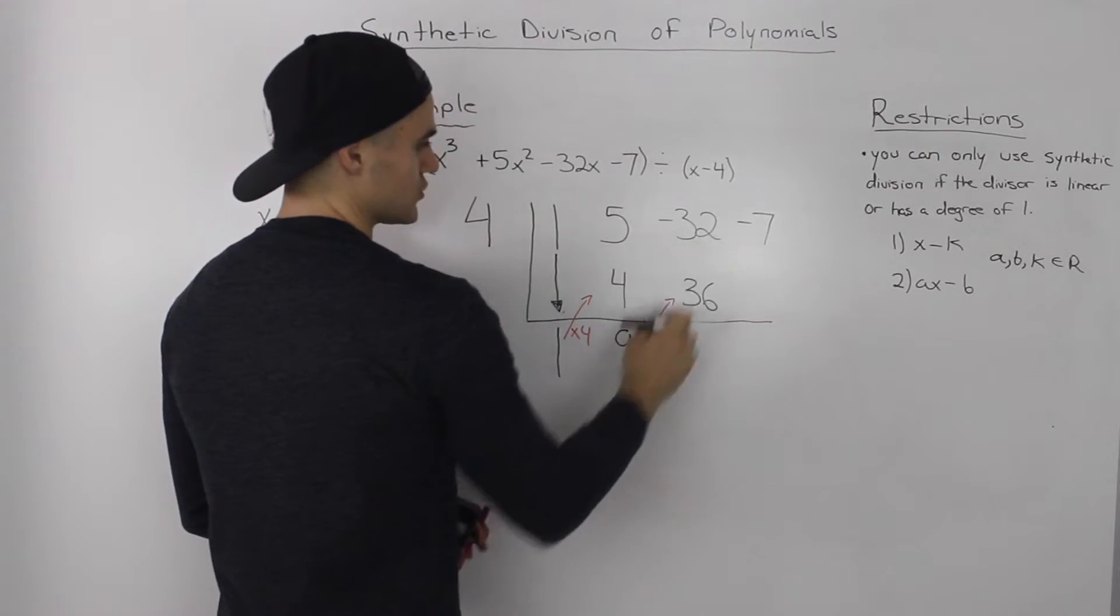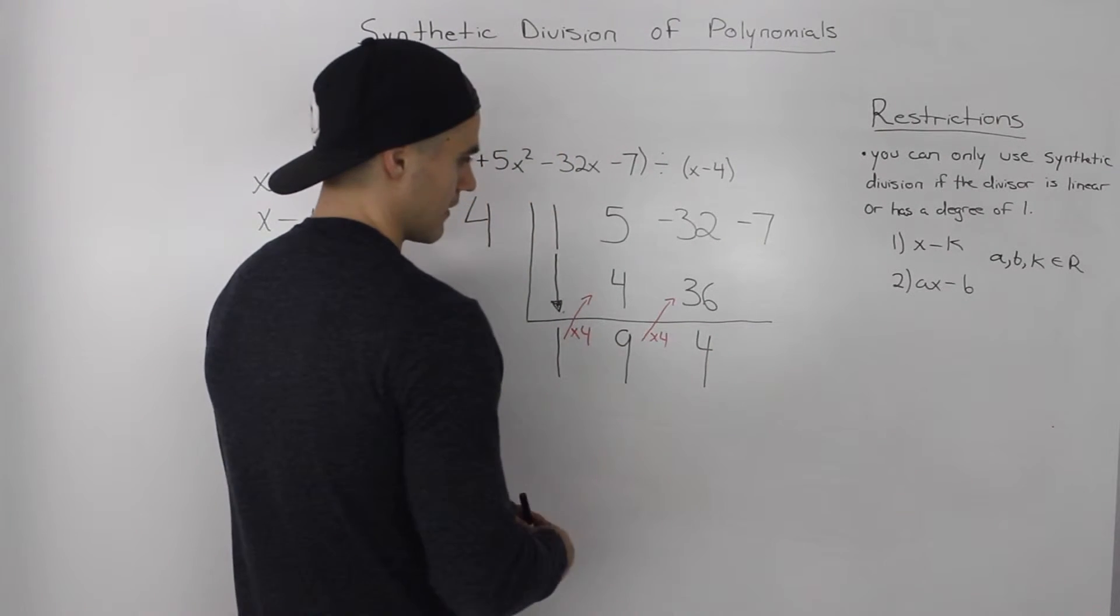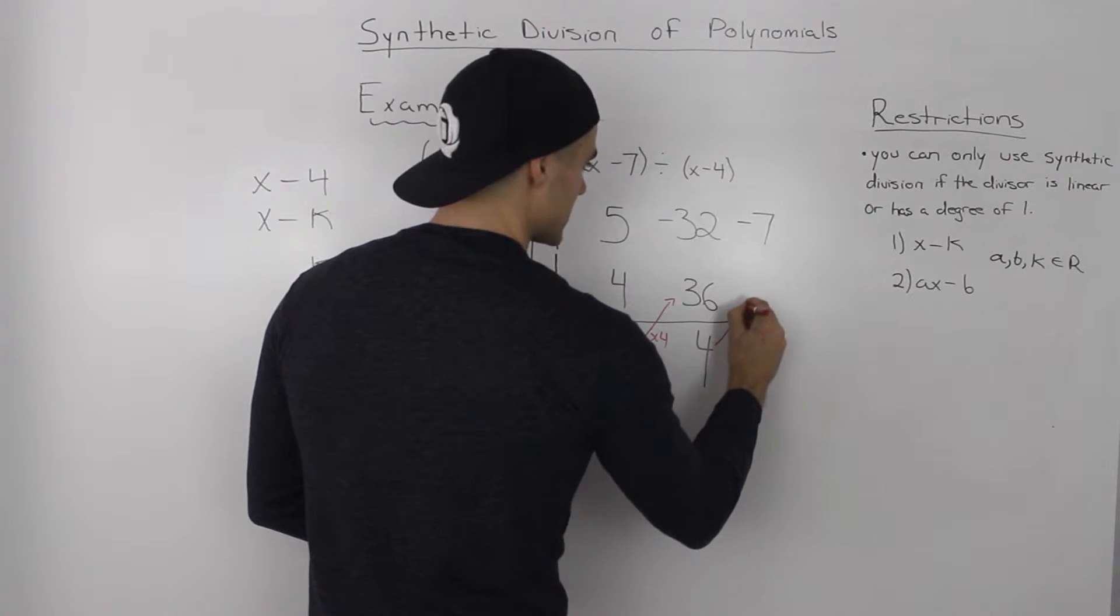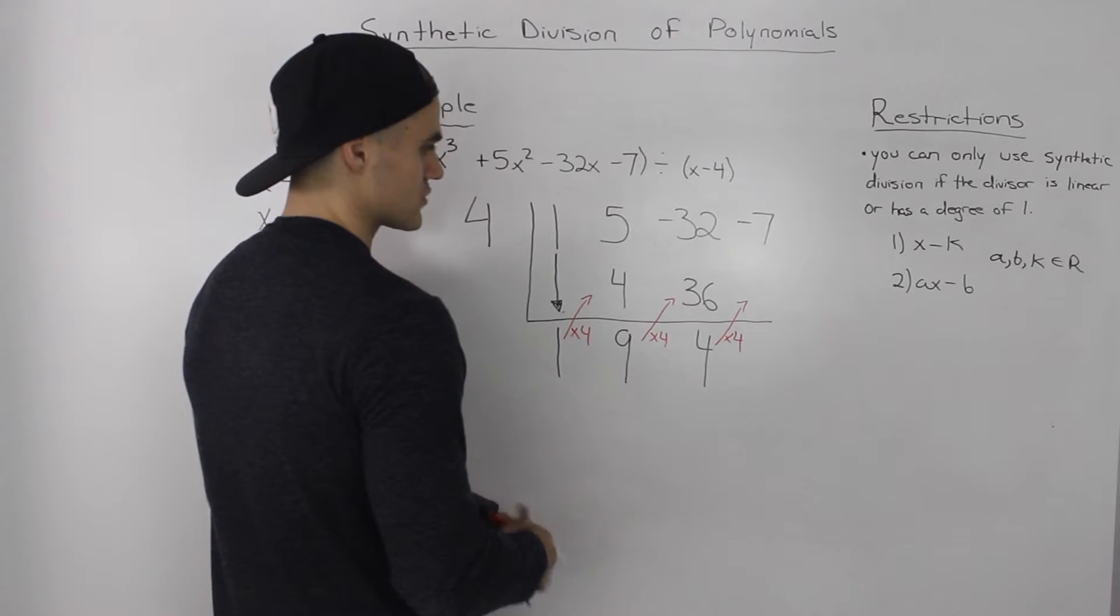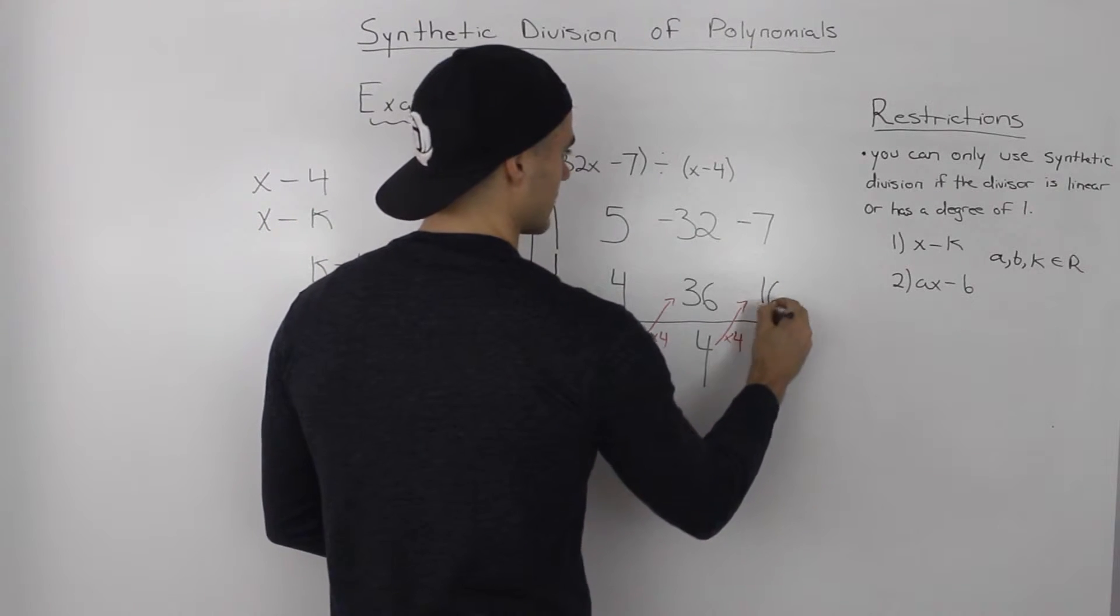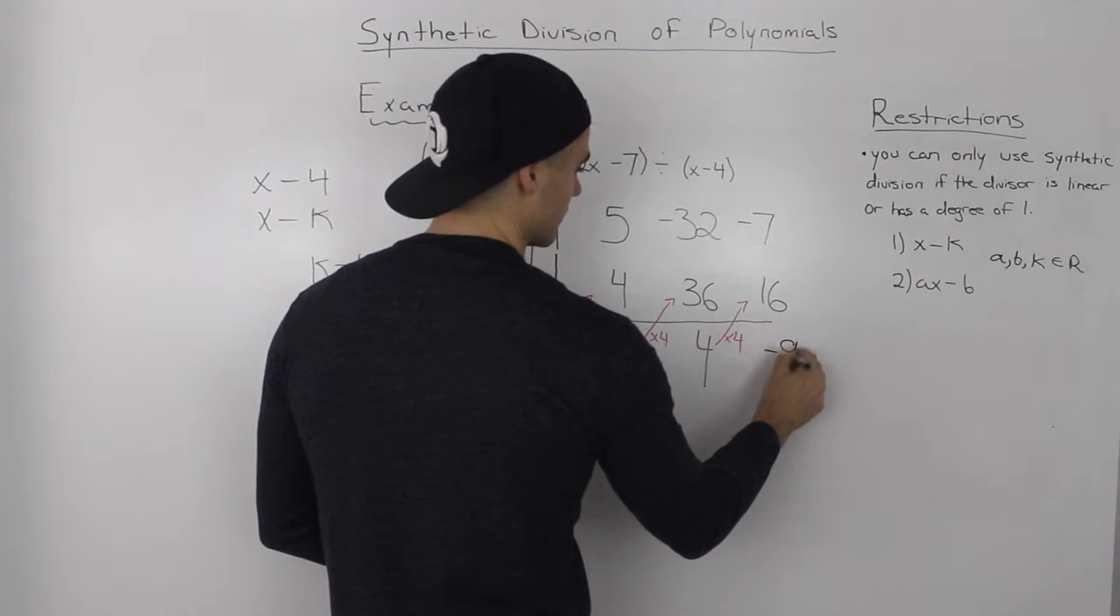Then negative 32 plus 36, you add them, and you get positive 4. And then same thing here, you take this 4, multiply it by the K value of 4. So 4 times 4 is 16, and negative 7 plus 16, that gives us positive 9.